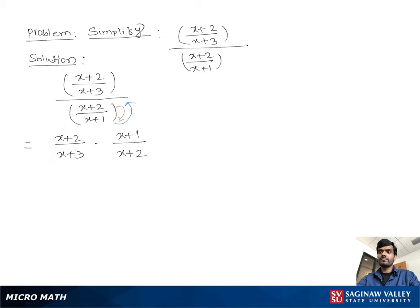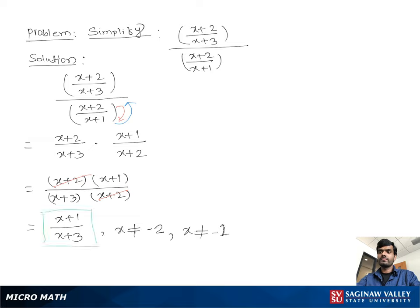We multiply top to top and bottom to bottom: (x+2)(x+1) over (x+3)(x+2). The (x+2) terms cancel out, giving us the simplified result x+1 over x+3, where x is not equal to negative 2 and x is not equal to negative 1.